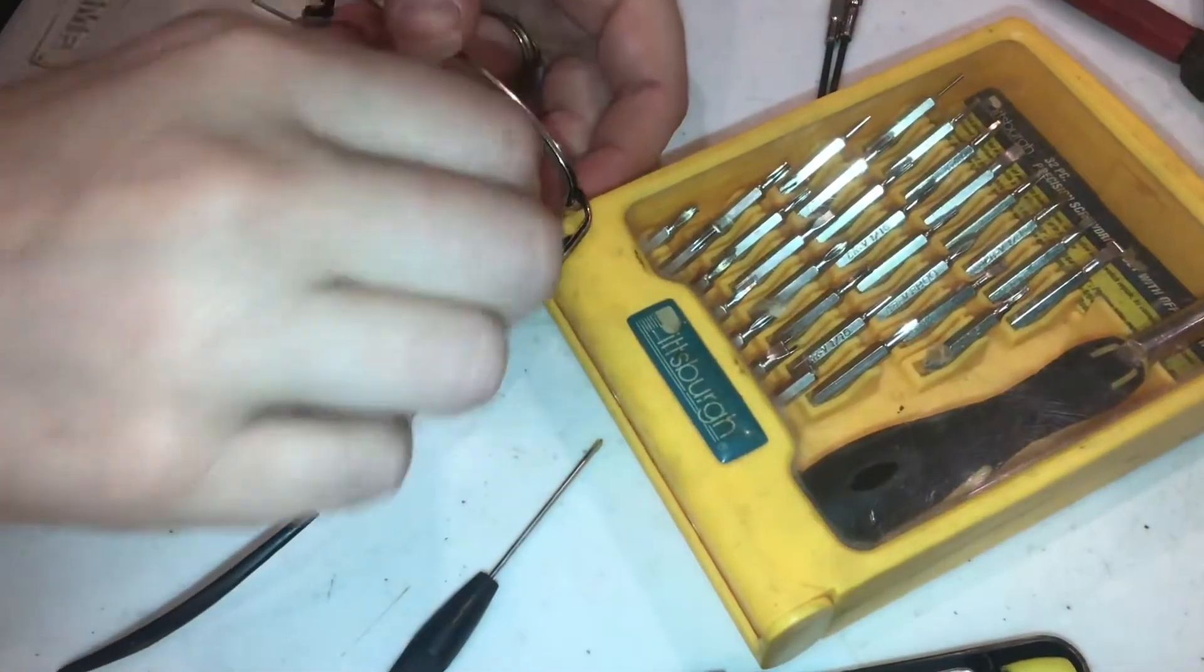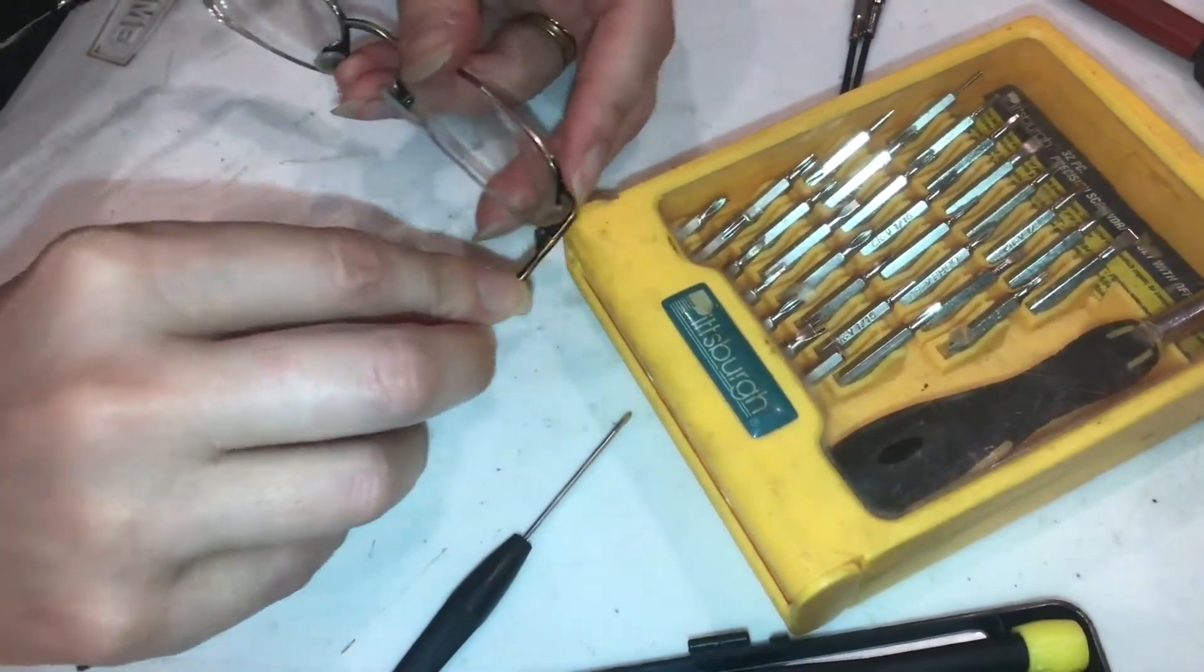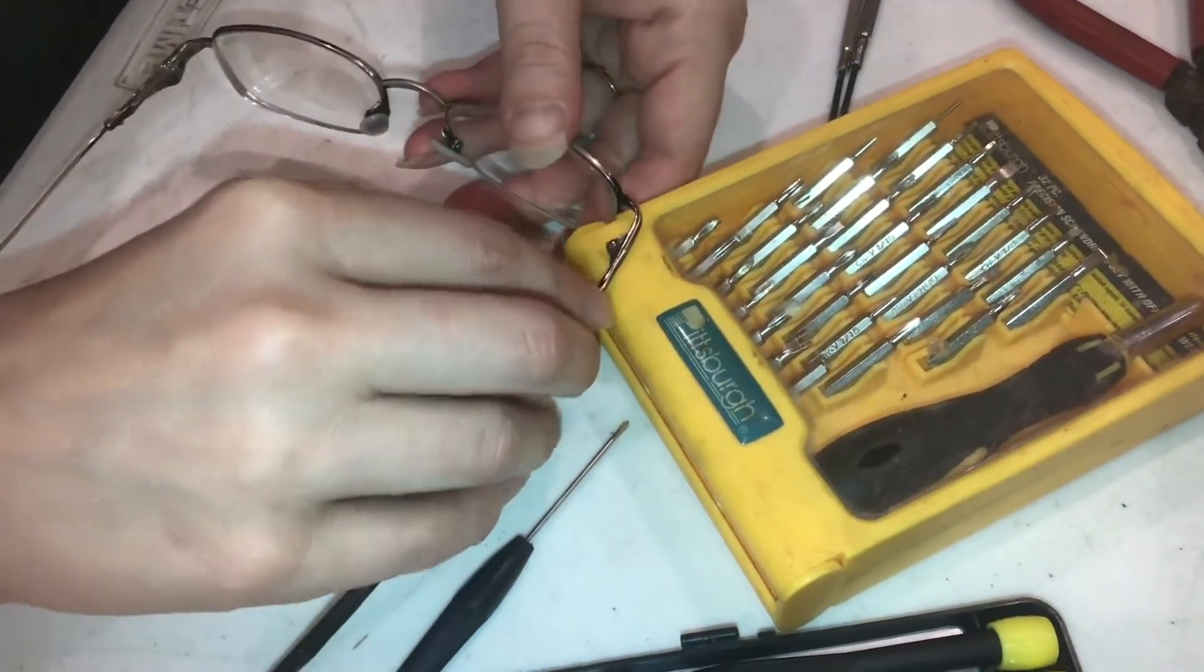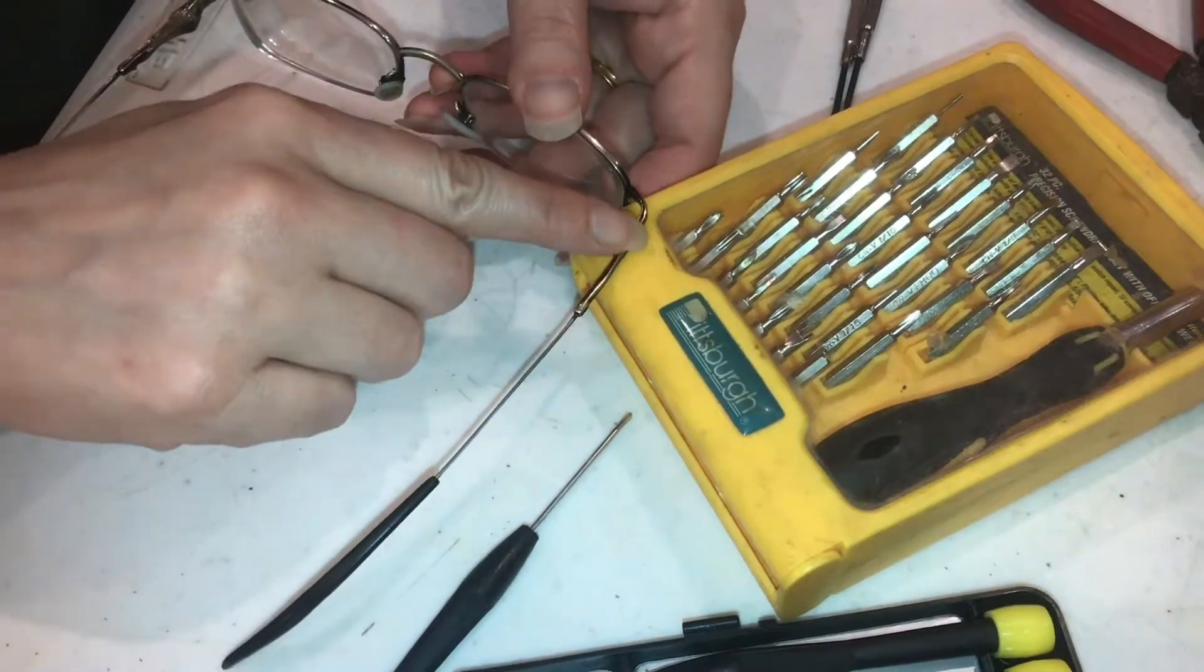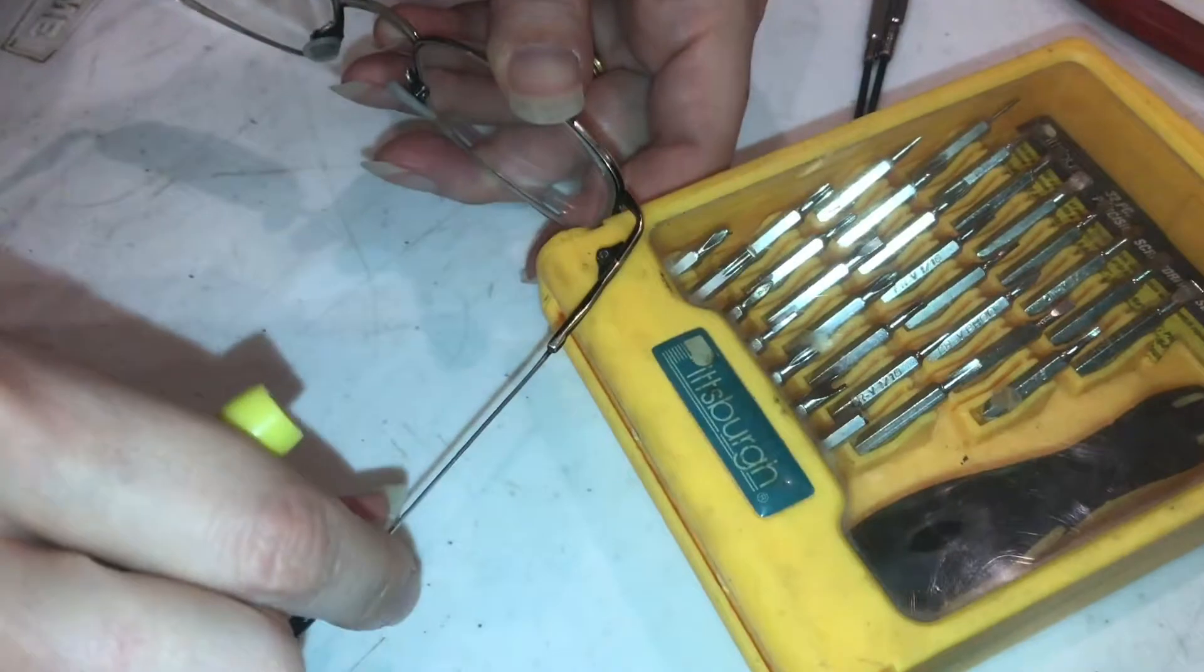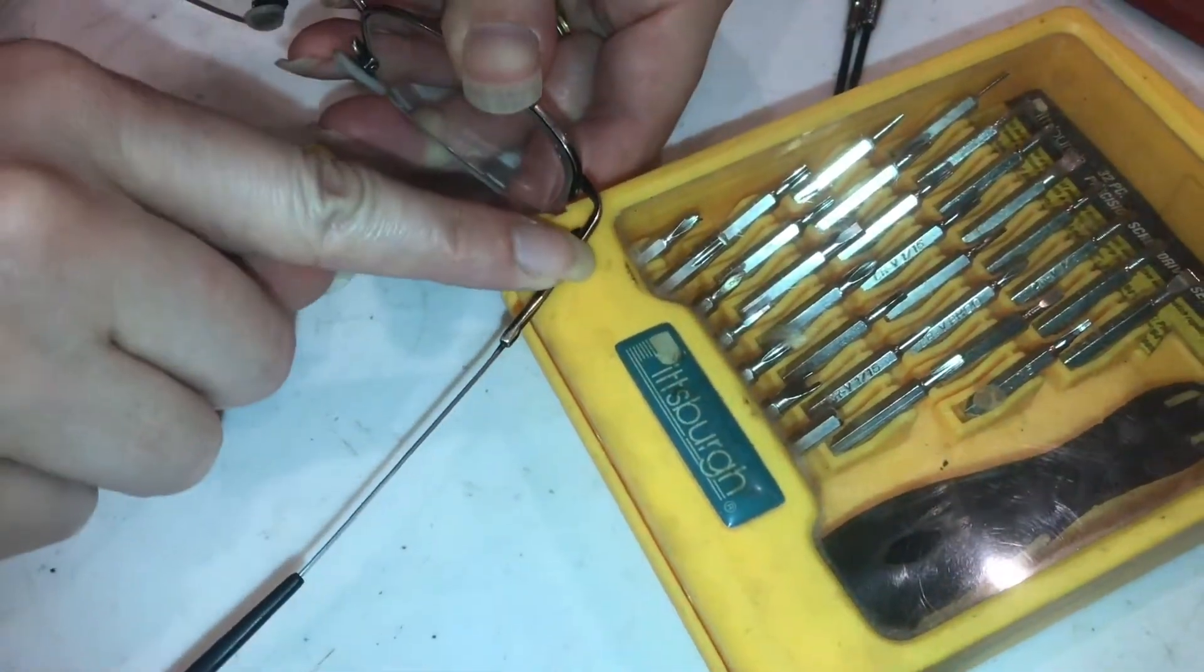In order to tighten this screw, we need to brace it on the corner of something. Down on the table we just don't have the right support, so we're on the corner of this plastic block. As we're tightening, we want to make sure that this is good and straight and we're fully down on the block.